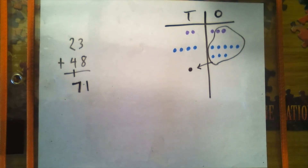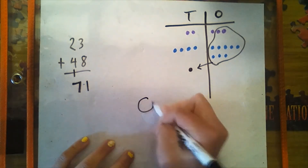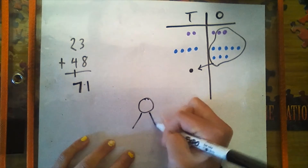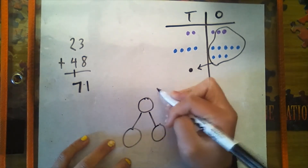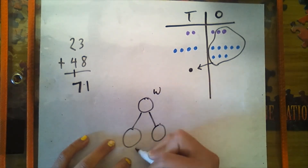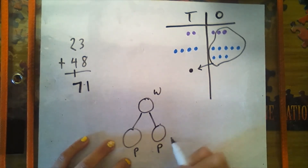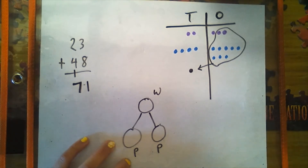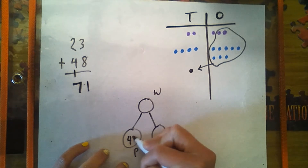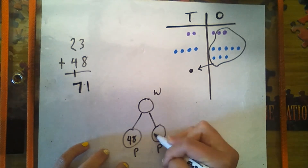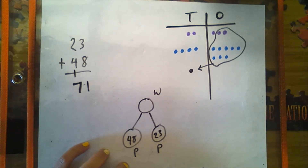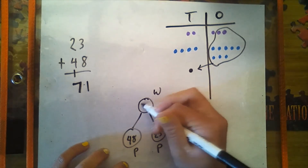Let's look at this as a number bond. Remember, we have our whole and our two parts. What are the parts? The parts are 48 and 23. What is the total or the whole? 71.